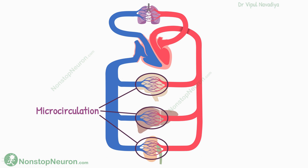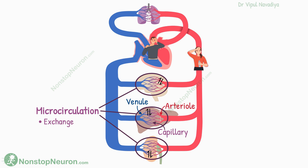Microcirculation, as per the name, is circulation at the micro level. It's basically the portion of the circulatory system from arterioles to capillaries to venules. It's this place where the exchange of nutrients and waste products, which is the main function of the circulatory system, happens. So all the hard work of the heart and blood vessels is ultimately to serve this area.